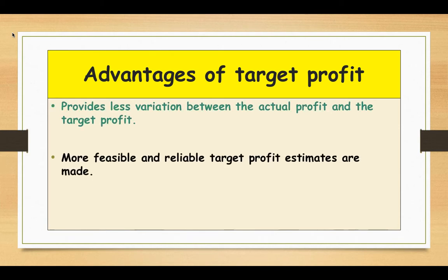The second point: more feasible and reliable target profit estimates are made, because target profit gets updated when the actual results change, thereby becoming more feasible and reliable to use.